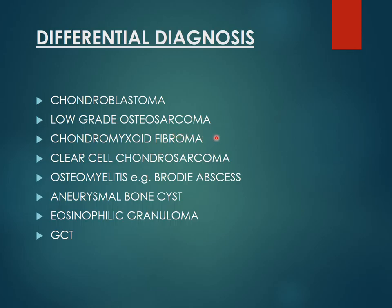Other differentials include low-grade osteosarcoma, chondromyxoid fibroma, and clear cell chondrosarcoma. Most of the differentials contain chondroid lesions — chondroblastoma, chondromyxoid fibroma, and chondrosarcoma — because our lesion has chondroid-type punctate calcification. Additional differentials include osteomyelitis such as Brodie's abscess, aneurysmal bone cyst, eosinophilic granuloma, and giant cell tumor (GCT).